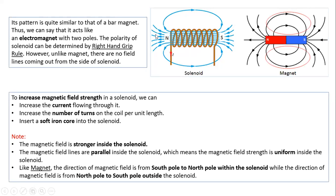To increase the strength of the magnetic field of a solenoid, there are three things to do. First, increase the amount of current flowing through it. Second, increase the number of turns wound per unit length — for example, going from 10 turns per meter to 20 turns per meter — so the current flows through the solenoid longer and the magnetic field becomes stronger.